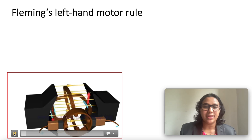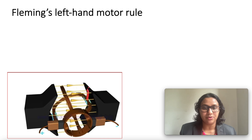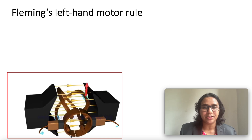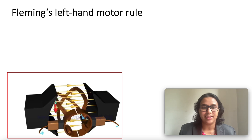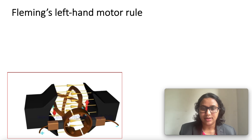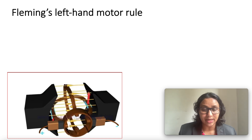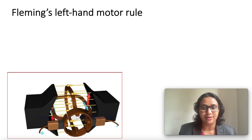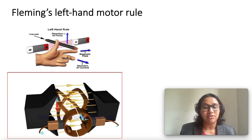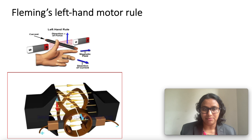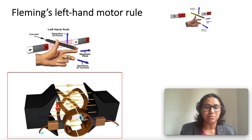Thus we can say that the direction of force on the conductor depends upon the direction of current and the direction of the magnetic field. Experiments suggest that the magnitude of the force is highest when the direction of current is at right angles to the direction of the magnetic field. In such a condition we can use a simple rule to find the direction of the force on the conductor.